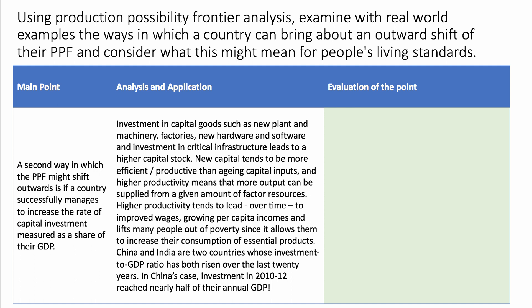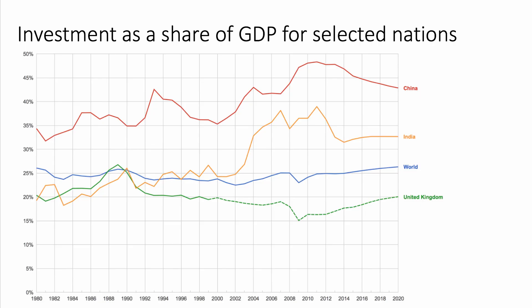Higher productivity leads over time to increased wages — firms can afford to pay people more — that lifts per capita incomes and helps take people out of extreme poverty by allowing them to increase their consumption of essential goods and services. China and India are good examples: the data show that both countries increased investment as a share of GDP significantly post-2000, with China's investment reaching nearly half of GDP. Here's a chart showing that increase, with the UK lagging behind the world average.